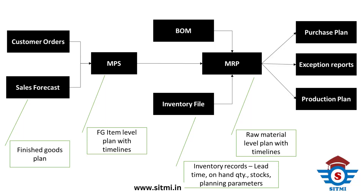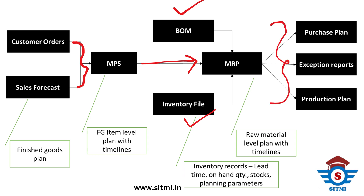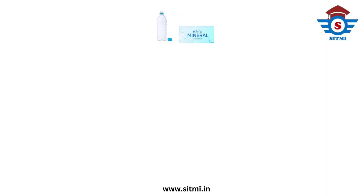In this flow, all the requirements from customer orders or sales forecast done by the demand planner are an input to the MPS. Demand plans are basically at finished goods level. MPS plans at item level with different timelines. MPS then gives an input to MRP, but MRP also takes other inputs like bill of material and inventory file, and from those inputs MRP gives outputs like purchase plan, exception reports, or production plan in the form of a raw material level plan.